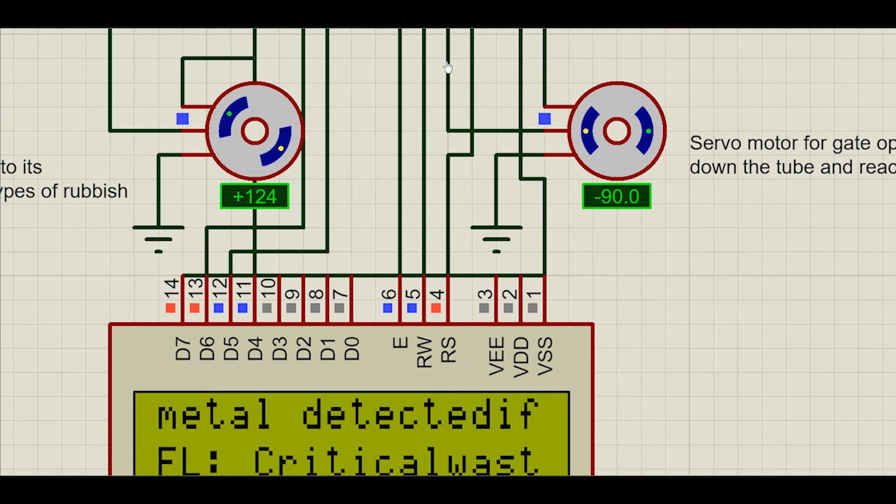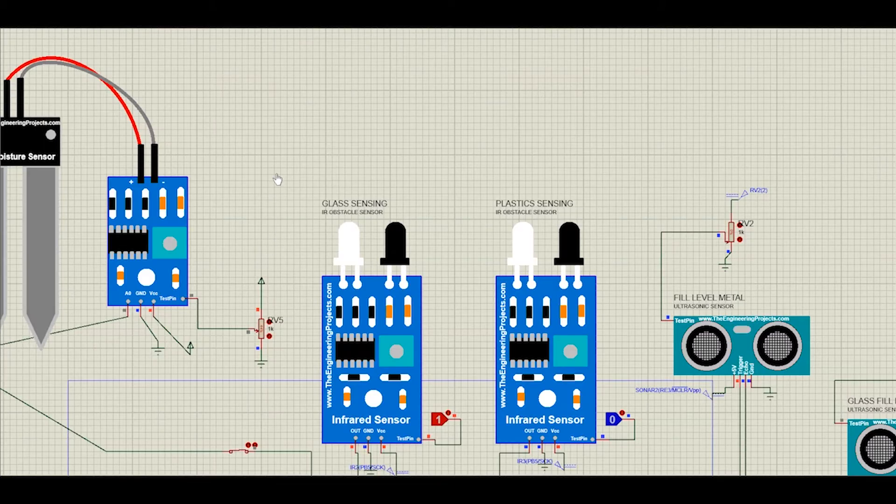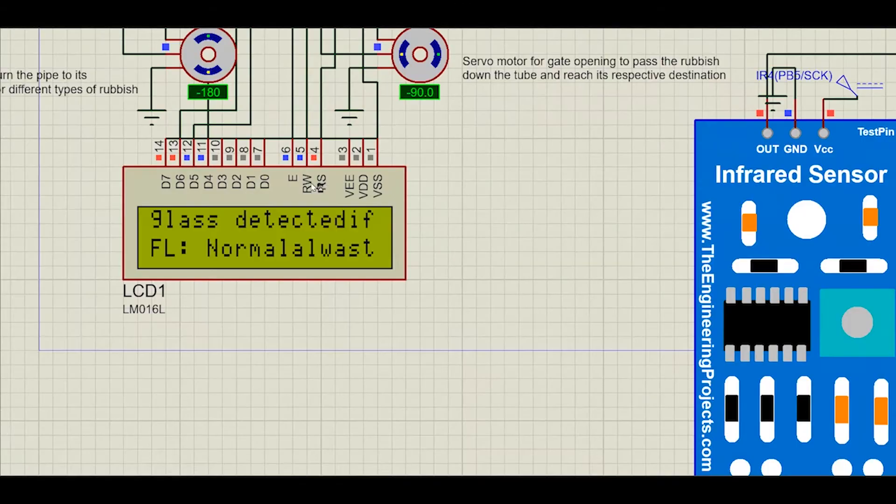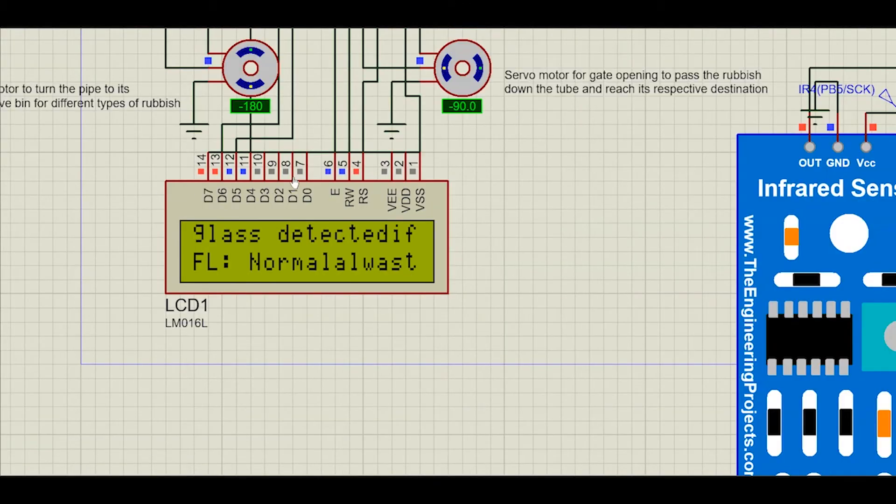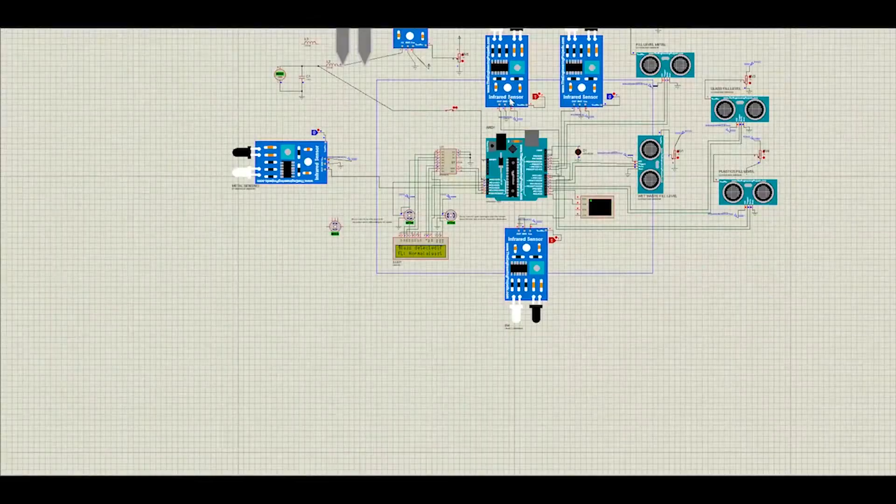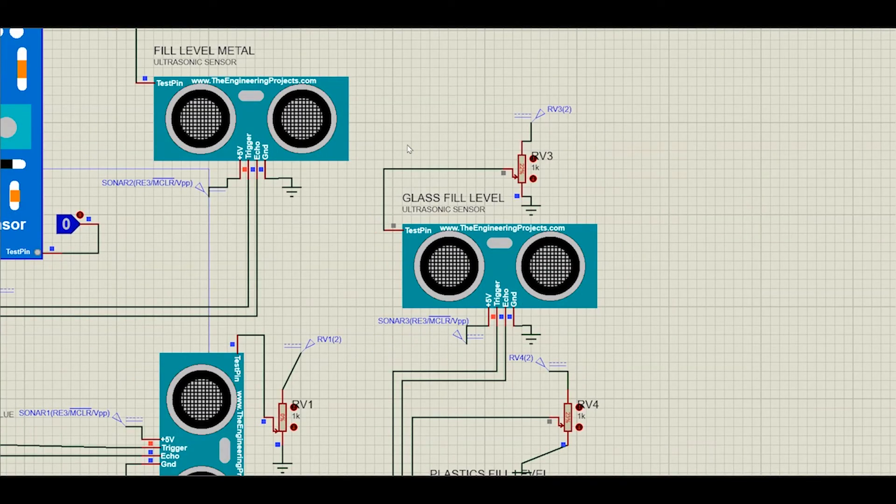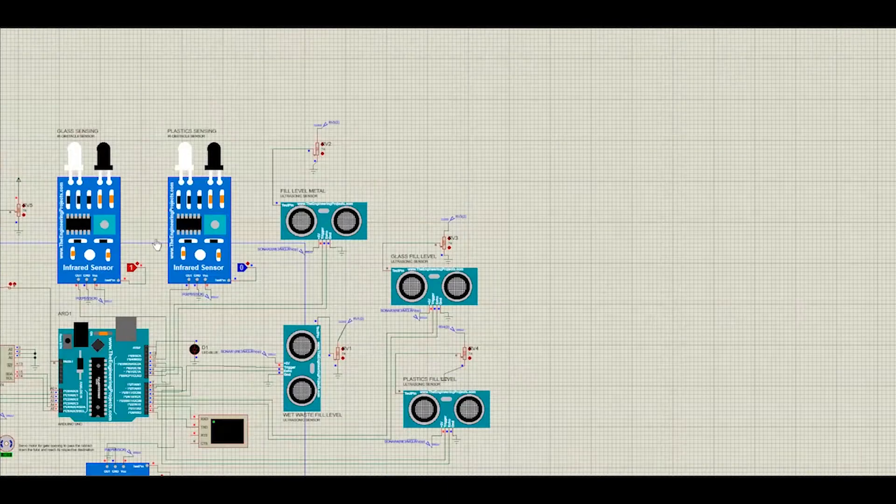When the metal sensing is turned on, it will output a message saying that metal is detected and the fill level is critical because we have set the fill level condition to be zero percent, that means it's full. And this servomotor will turn to its respective bin and this servomotor will turn 90 degrees so that it lets the metals to slide directly through the pipe to its final destination.